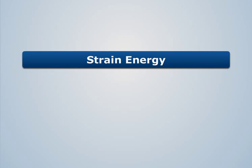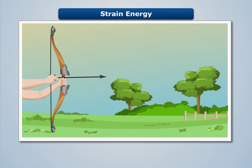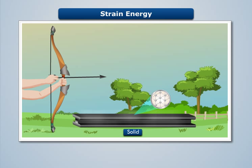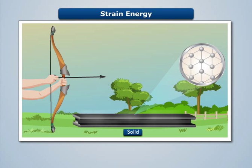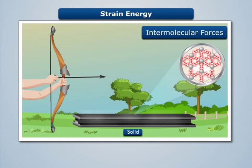Let us understand the concept of strain energy by taking an example of bow and arrow. We know that molecules of a solid are held together by its intermolecular forces. And to deform a solid, some work needs to be done on it.